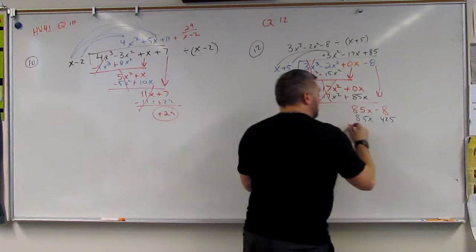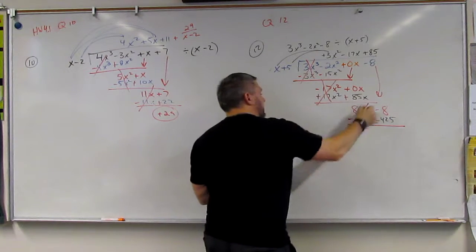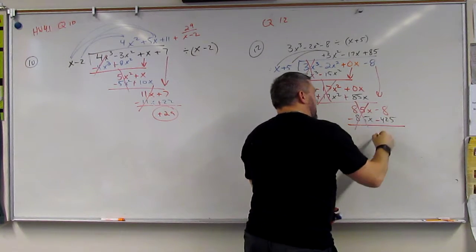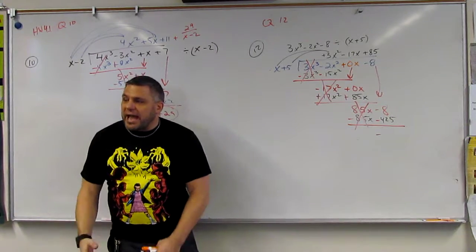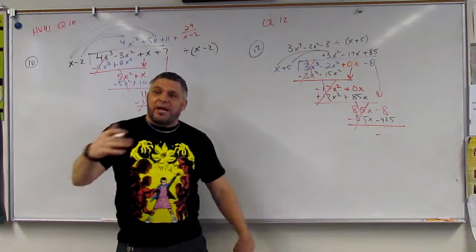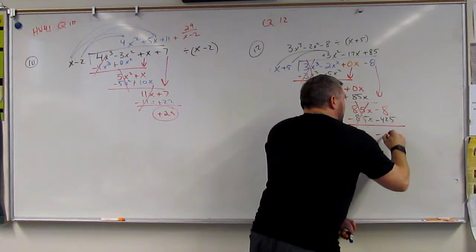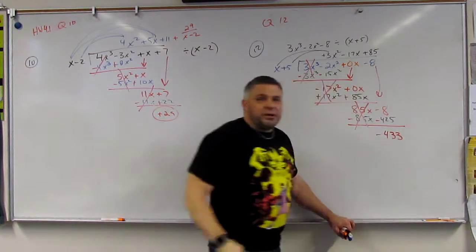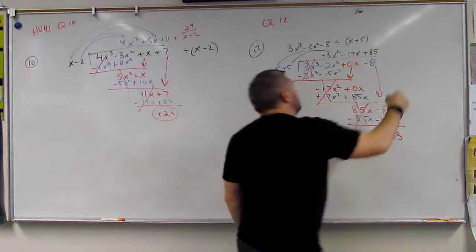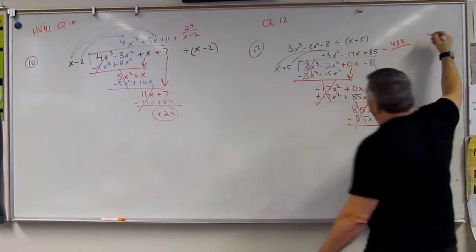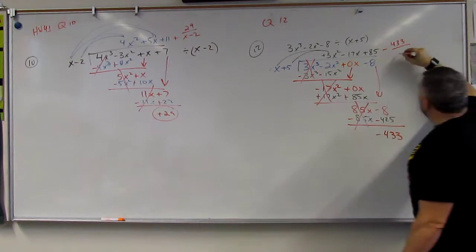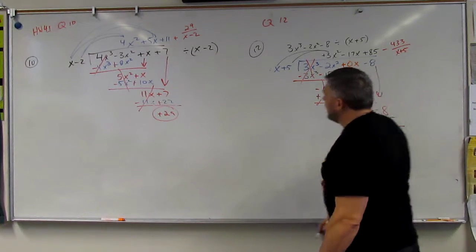Draw the line. Those cancel. Then I have a negative and a negative, which makes a negative, because I'm adding two negatives, so it's getting more negatives. So how much am I left with? 433, right? So what that means is minus 433 over x plus 5. And that's it.